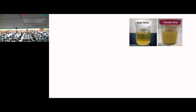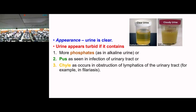Next is color of urine. The appearance of urine is usually clear. Urine can appear turbid if it contains more phosphates, pus (pyuria), or chyle (due to lymphatic obstruction).